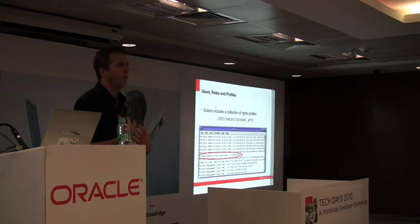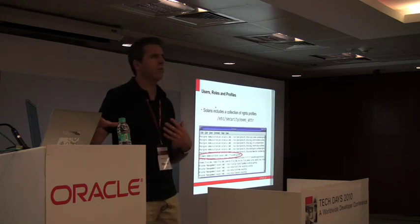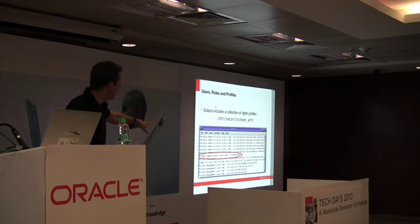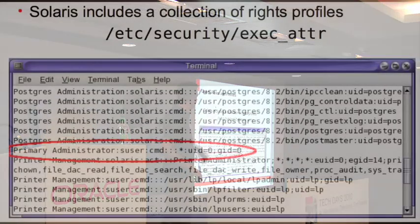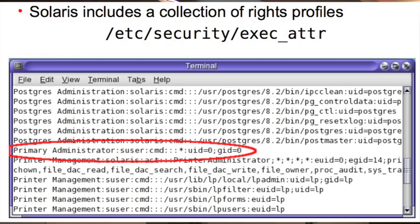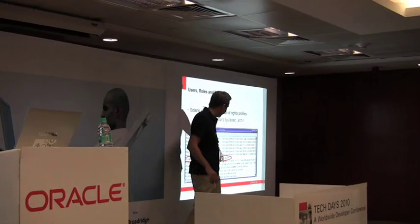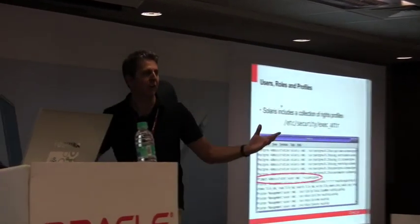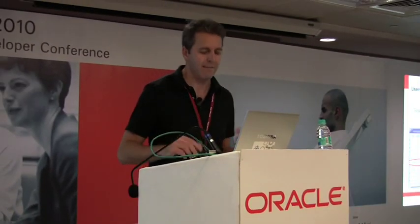I want to be the primary administrator of this system, and there's a rights profile that allows me to do that. There's the /etc/security/exec_attr file, and in there you can see all the rights profiles that are named. Here's primary administrator — the primary administrator can execute anything as user ID zero. Who's user ID zero? That's root. So basically, by giving myself this profile, I can sort of behave as root.